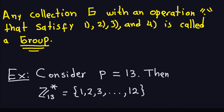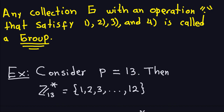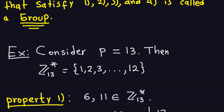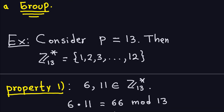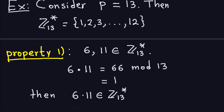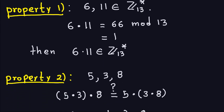Let's take the prime p = 13, so Z_13* is all the numbers from one to twelve. Let's check property one with a pair of examples. Take six and eleven — both are in Z_13*. Six dot eleven: multiply to get 66, then 66 modulo 13 gives one, which is in Z_13*. So the product stays in the set. This happens every time, though this is just an example, not a proof.